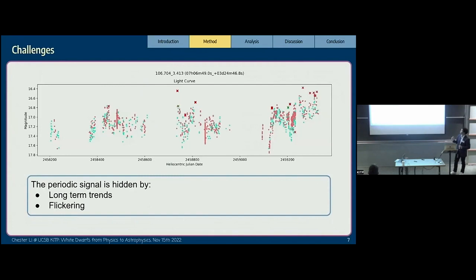Let's take a look at the challenges we faced. This is a light curve of a CV star. The green points are the G band data, the red points are the R band data of ZTF. We can see that this light curve has a lot of long-term trends and flickering. We have to overcome this problem before running the period finding code.